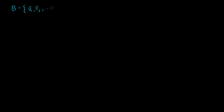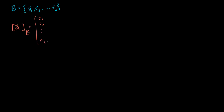Let's say I've got some basis b, and it's made up of k vectors: v1, v2, all the way to vk. And let's say I have some vector a, and I know what a's coordinates are with respect to b. So the coordinates of a with respect to b are c1, c2, and I'm going to have k coordinates, because we have k basis vectors. If this describes a subspace, this is a k-dimensional subspace.